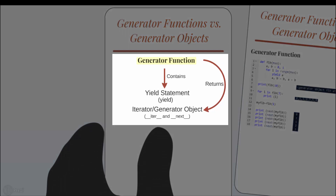A generator function, also called a resumable function, is just like a regular function in Python. But instead of a return statement, it has one or more yield statements. And when you call a generator function, it returns an iterator object, which is also known as a generator object, or more commonly called a generator.